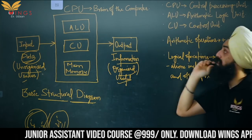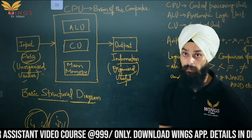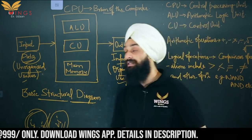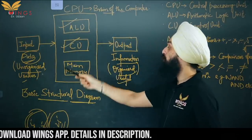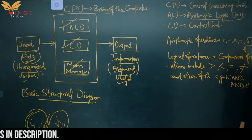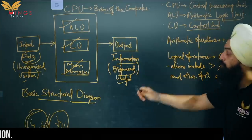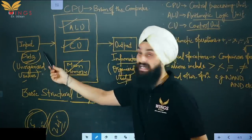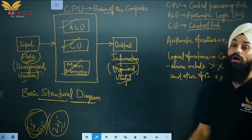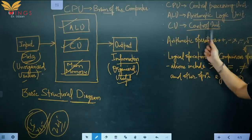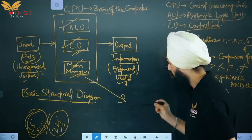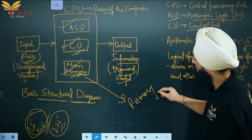The CPU stands for Central Processing Unit. It is also called the brain of the computer — so a possible exam question is: which part is known as the brain of the computer? Answer: CPU. Inside the CPU, there are mainly three parts: ALU (Arithmetic Logic Unit), CU (Control Unit), and Main Memory, which is also called primary memory.